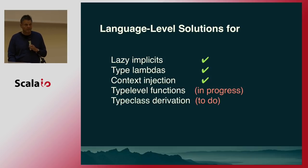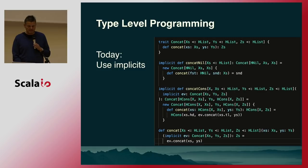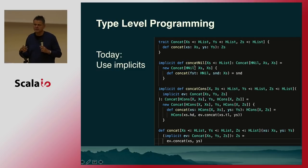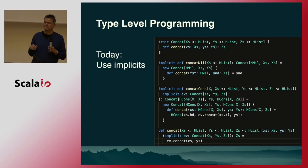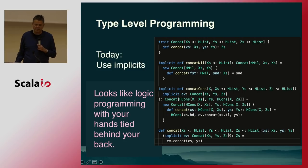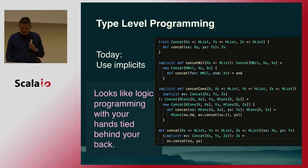Let me finish with type-level programming. The status quo is something like this: you use implicits. If you want to represent the concatenation of two HLists, you do it indirectly — you can't really talk about the type that concats two HLists directly, but you can generate it through an implicit. An implicit can give you a value that happens to have this type. It's kind of roundabout — it looks like logic programming with your hands tied behind your back. Can we do better? That's what we tried over the summer.